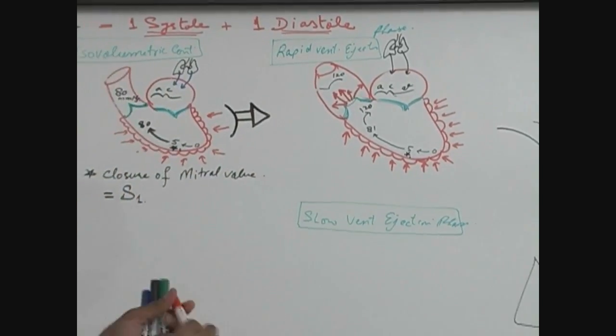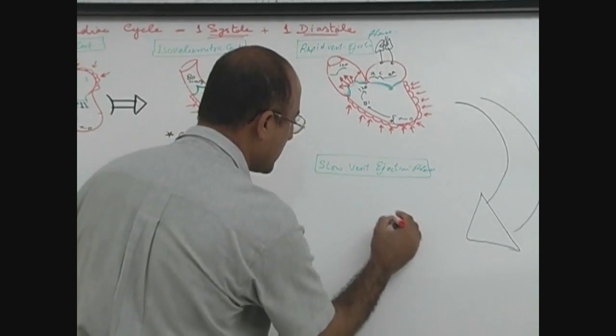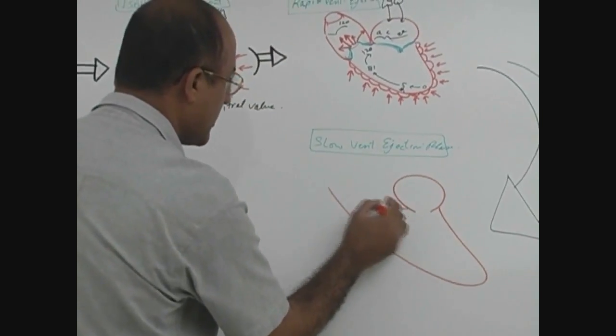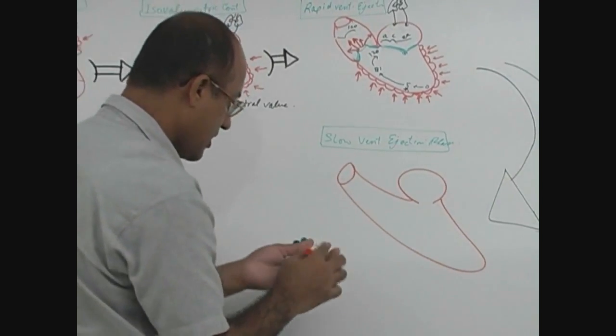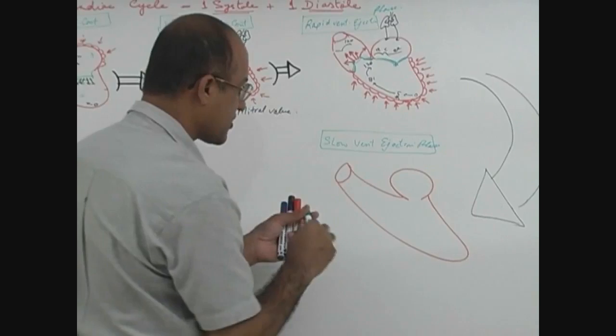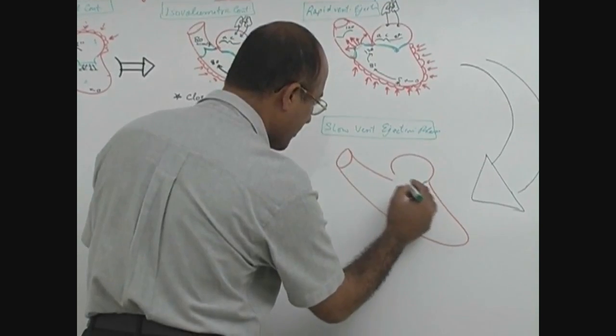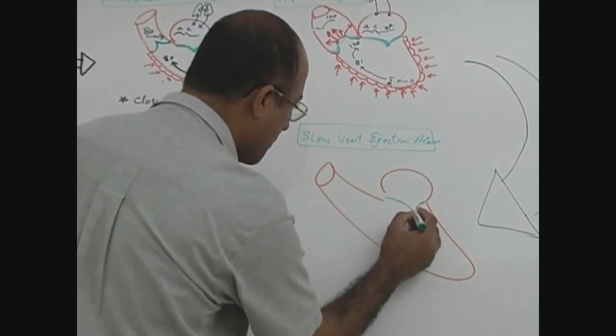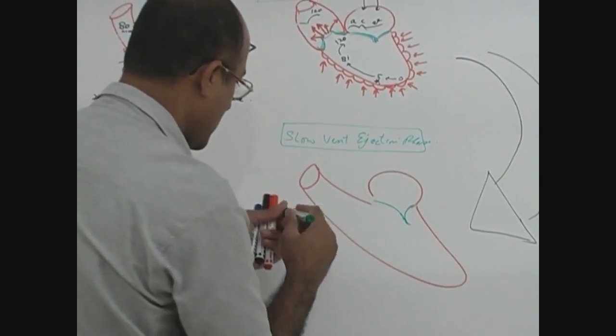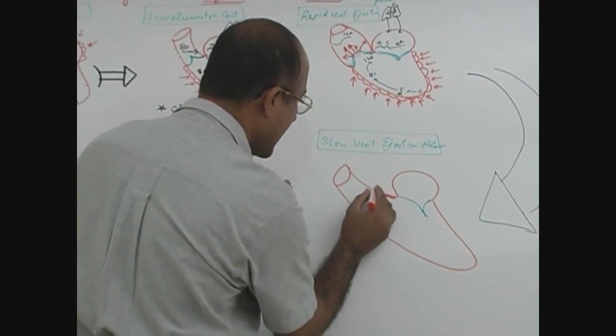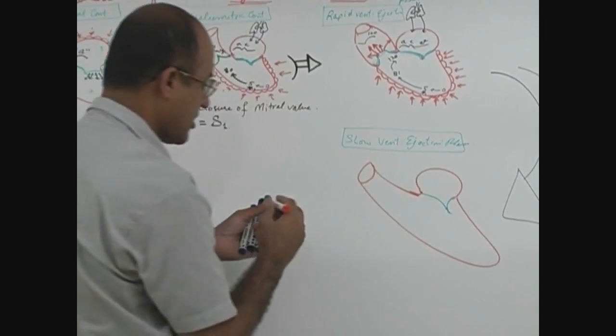Now again let's consider the three chambers during the slow ventricular ejection phase. As we have discussed that throughout the ventricular contraction, mitral valve will remain closed as pressure in ventricles remains constantly higher than the pressure in atrium.